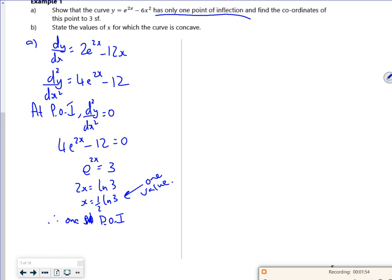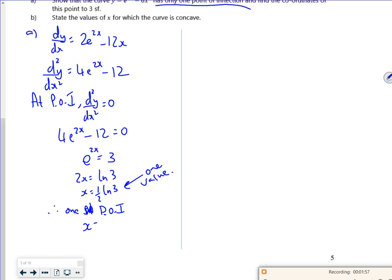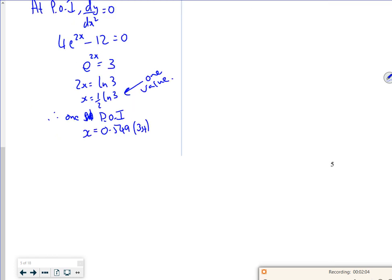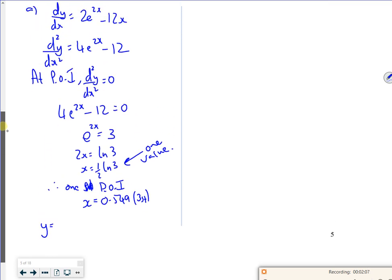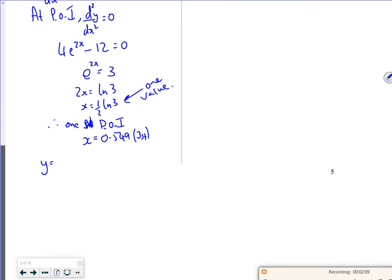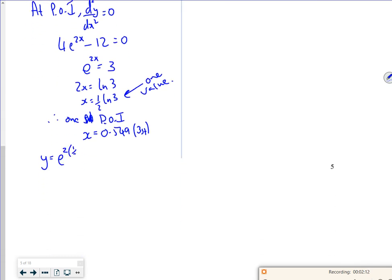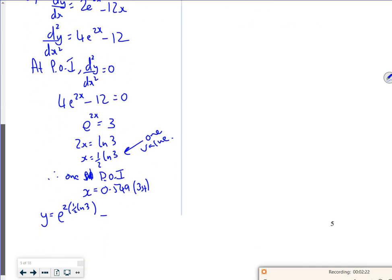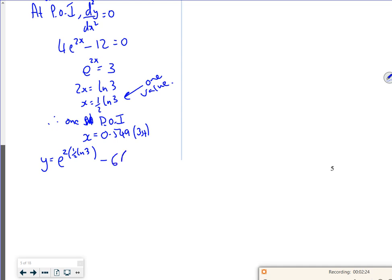Now it says find the coordinates to 3 significant figures. So if I put that in my calculator, I think it's about 0.549. I do need to sub back into the original equation, which was e^(2x) - 6x². And if that works, that gives you 1.19.